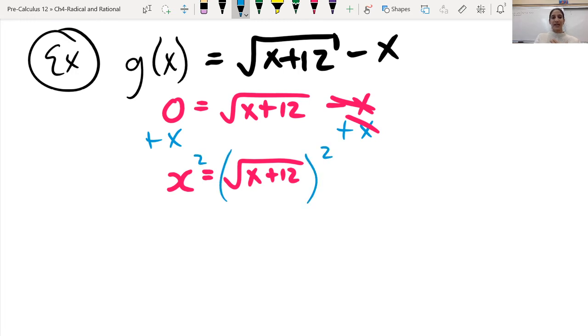In order to get rid of the root sign, we would square that side and that side. And so I get x squared equals x plus 12. Okay, and then if I'm trying to solve this.